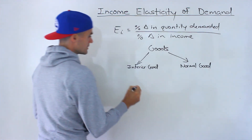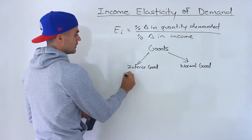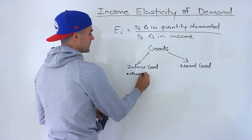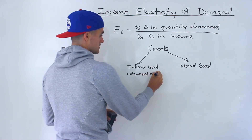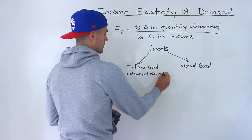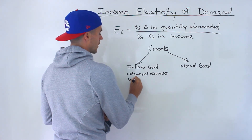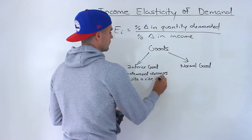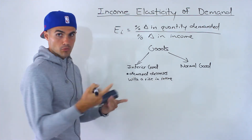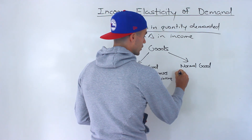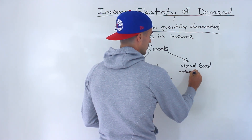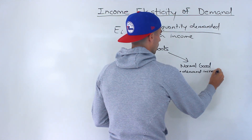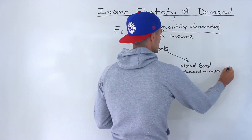The difference between these is that for an inferior good, demand decreases with a rise in income, while for a normal good it's the opposite — demand increases with a rise in income.